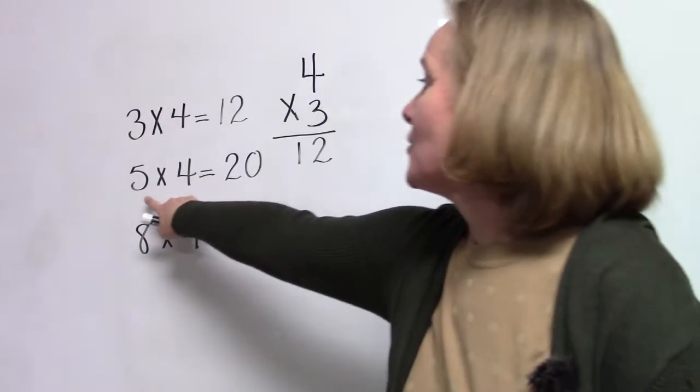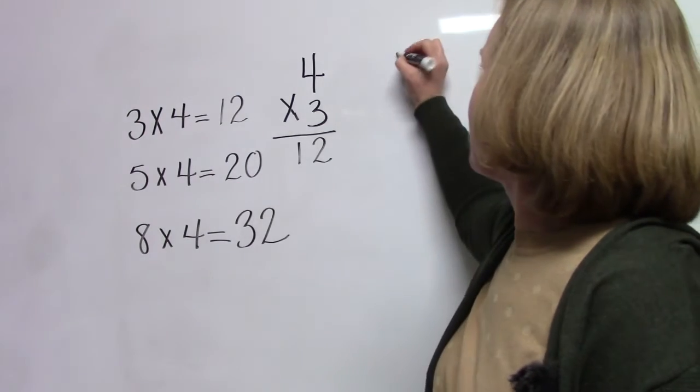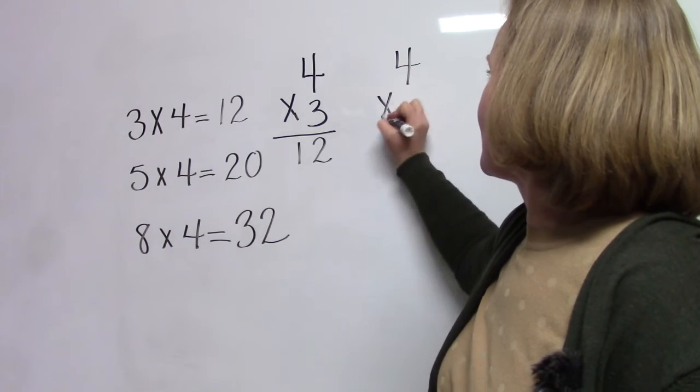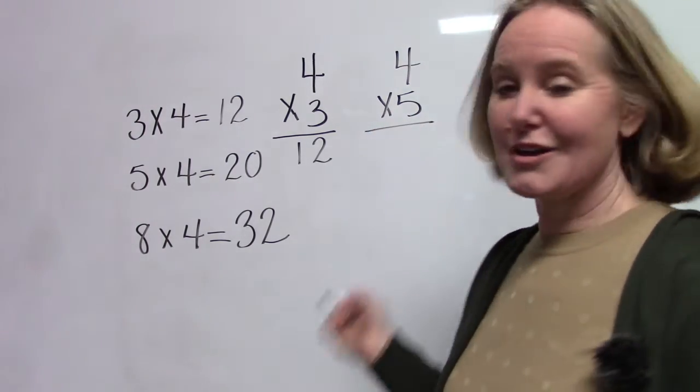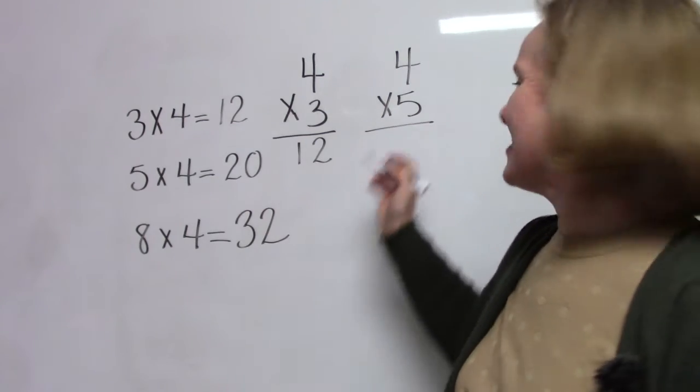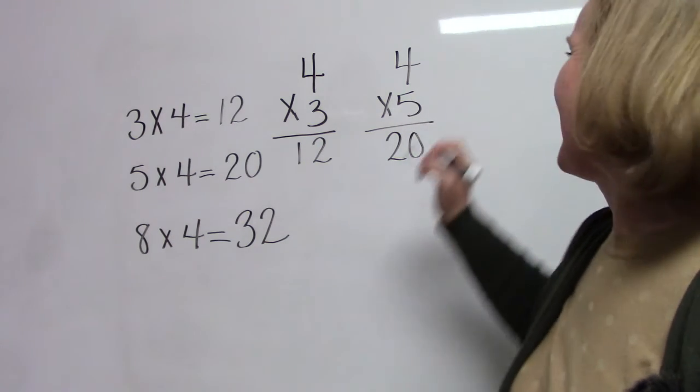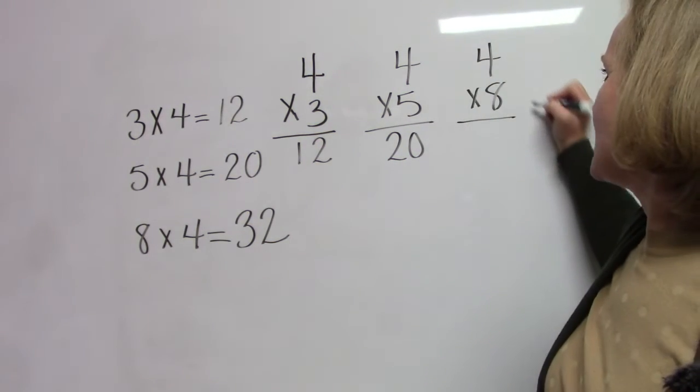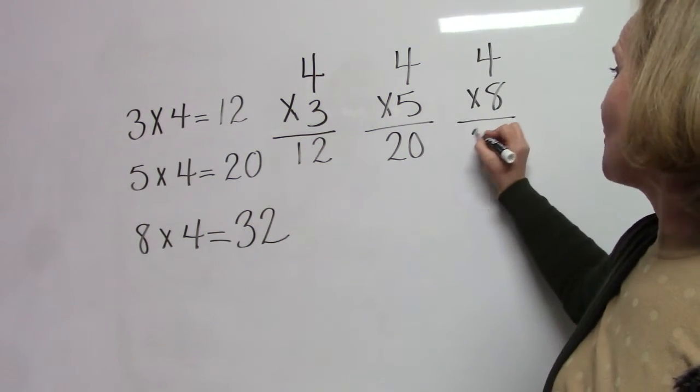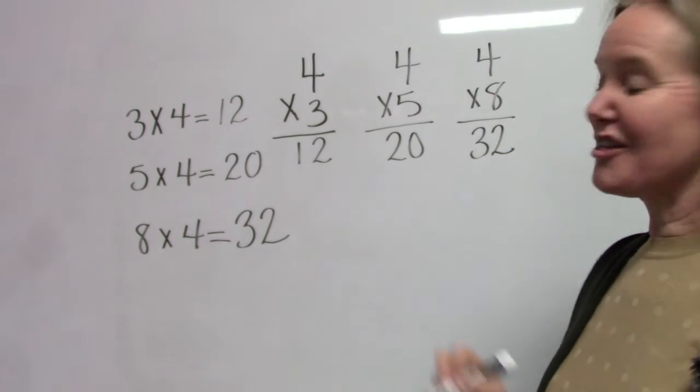The same would be true for five groups of four. We could write it that way. And our answer would be twenty. I'm going to try one more. Four times eight, or eight groups of four is thirty-two.